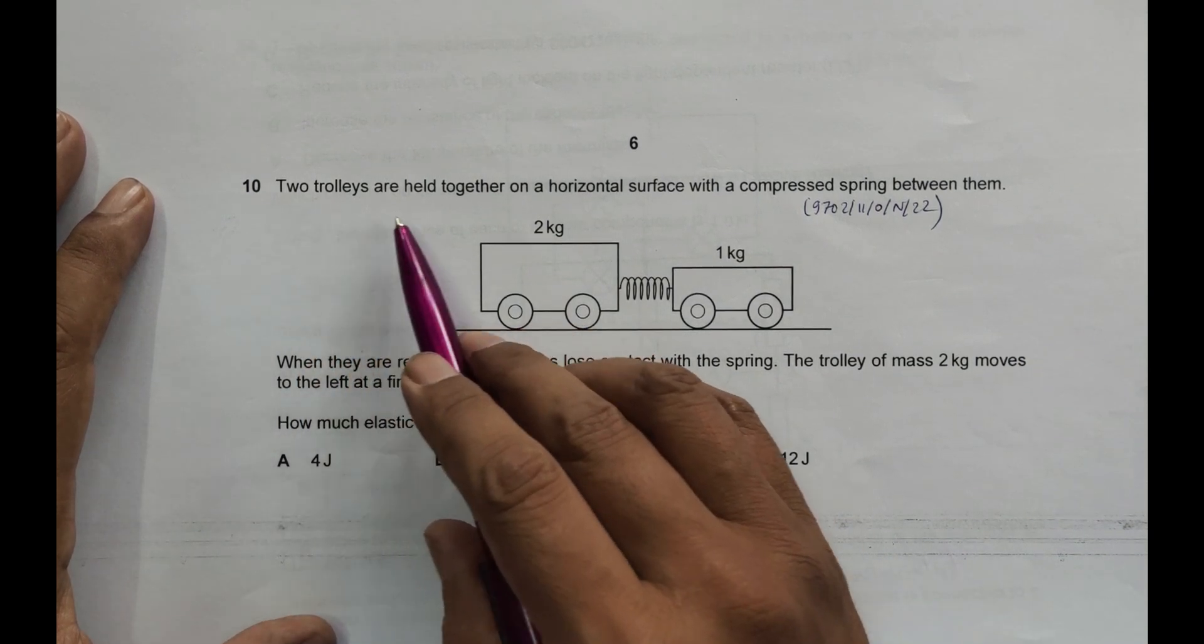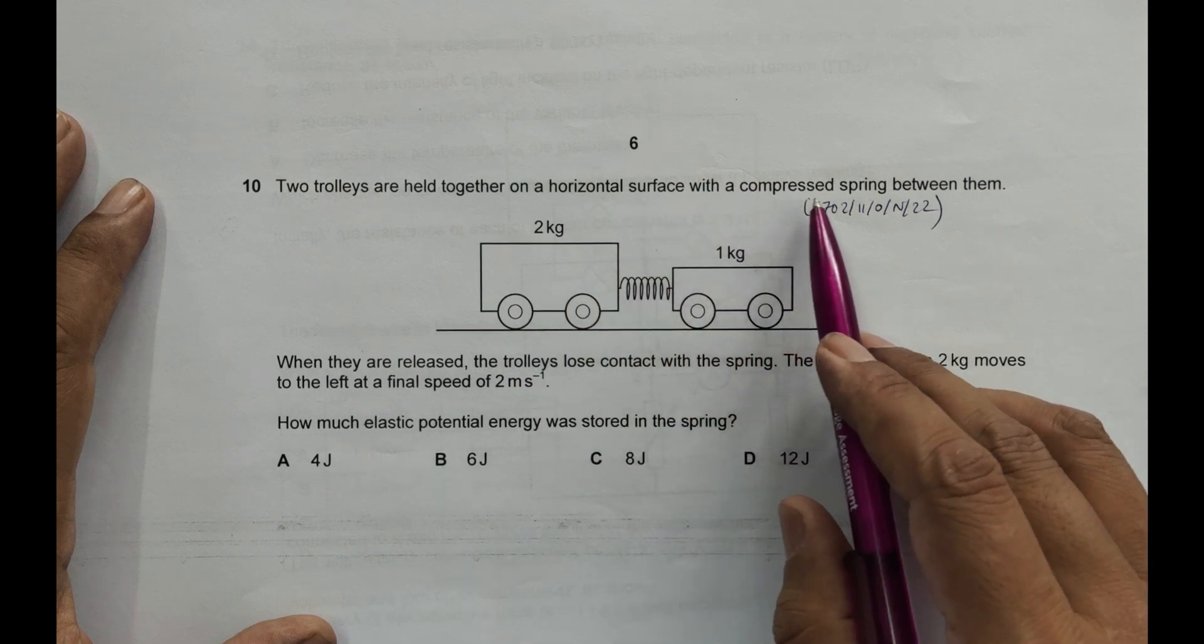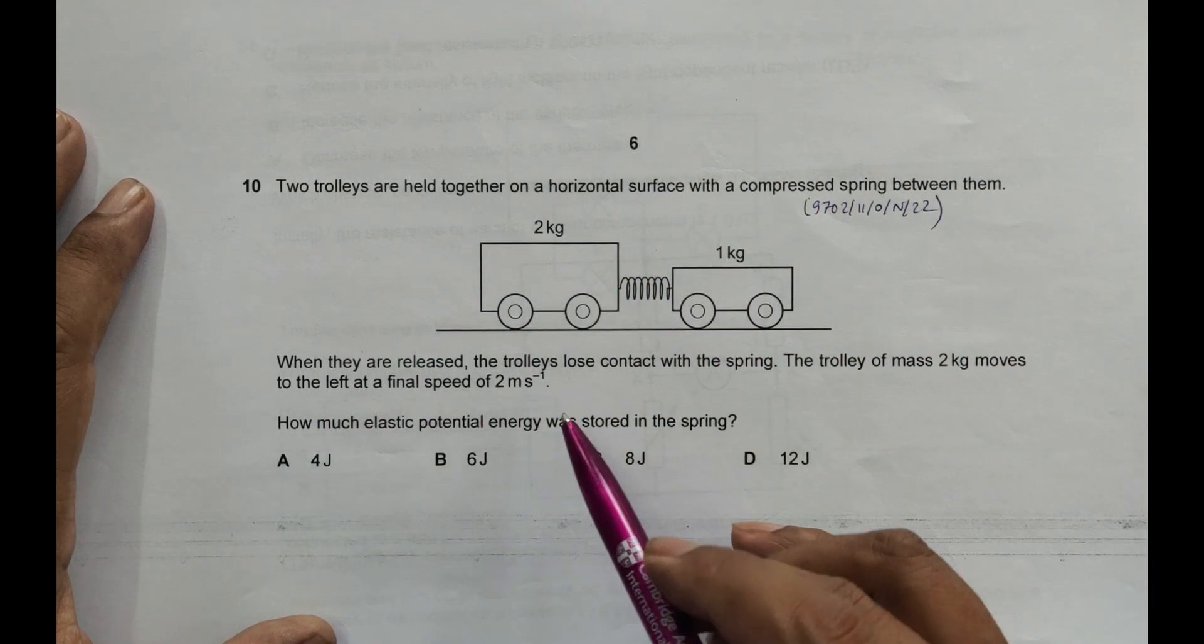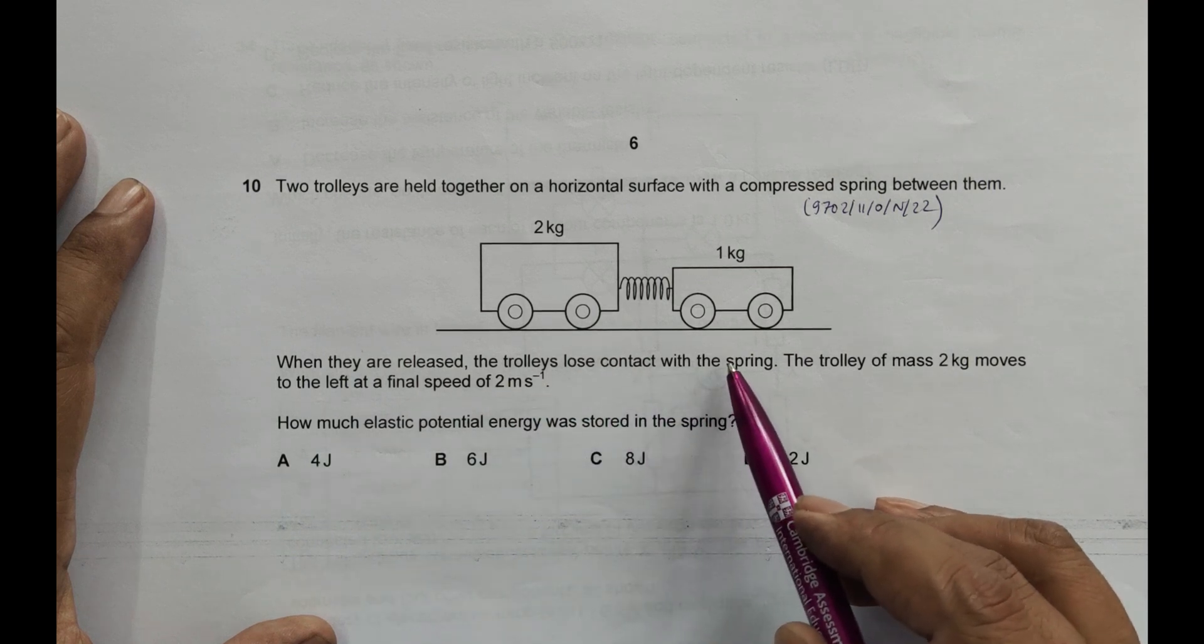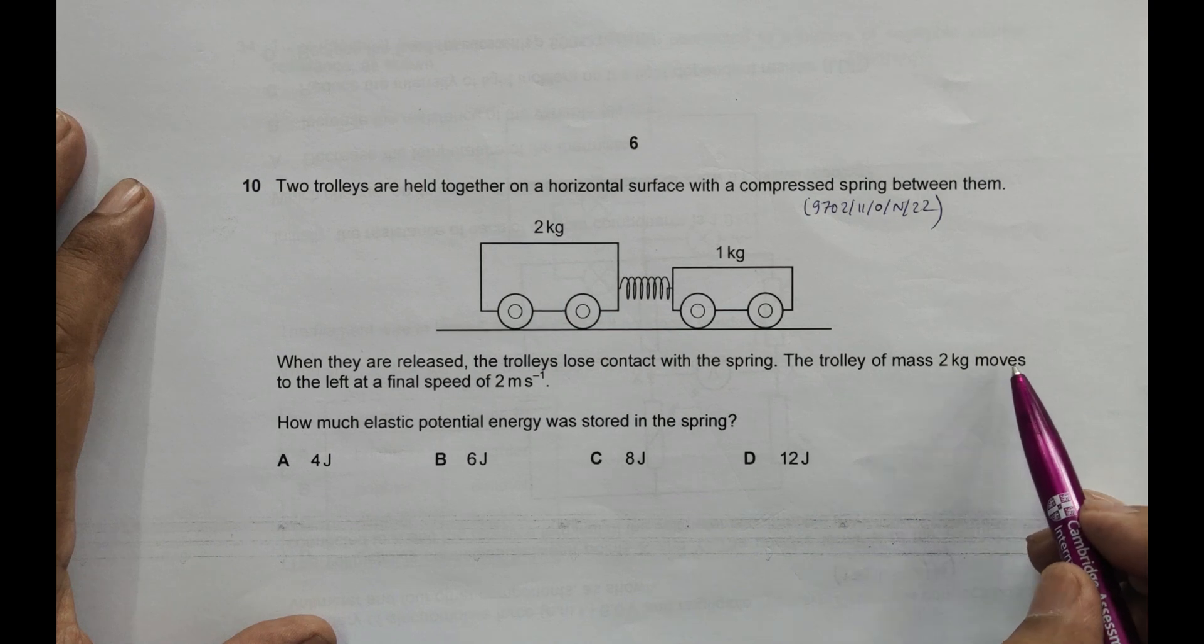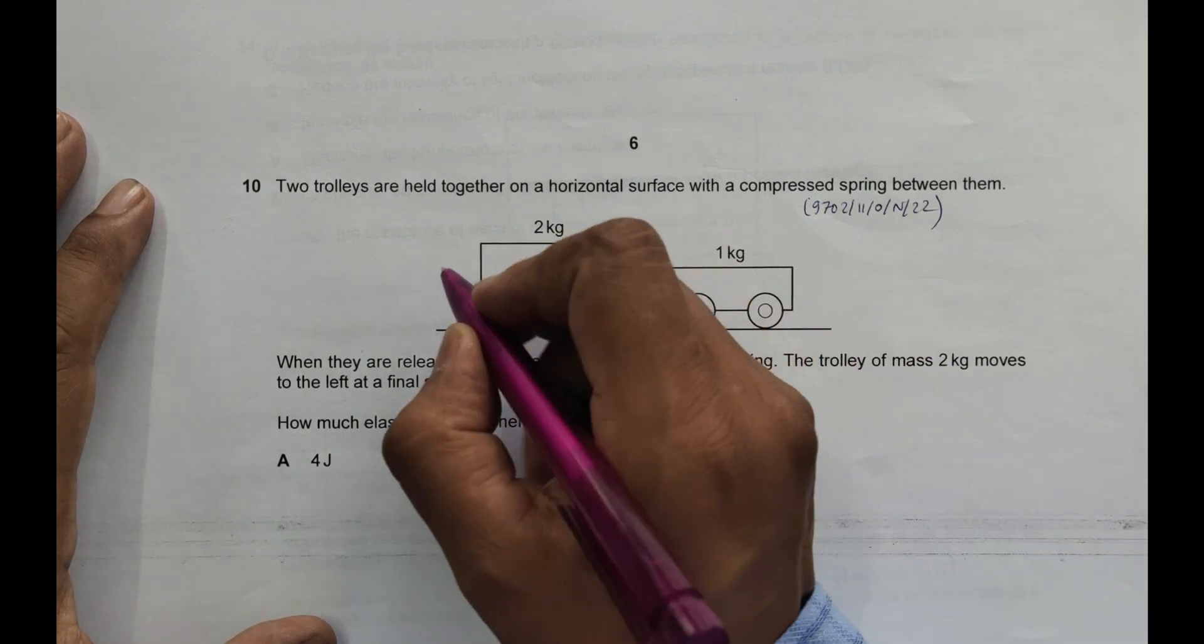It says two trolleys are held together on a horizontal surface with a compressed spring between them. When they are released, the trolleys lose contact with the spring. The trolley of mass 2 kg moves to the left at a final speed of 2 meters per second.